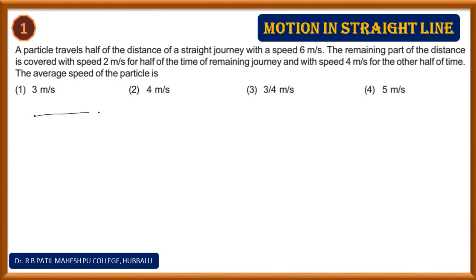Let me mark the total journey as distance x, from initial point A to final point B. First half journey is x/2 and second half is x/2, with midpoint C. The velocity in the first segment is v1 = 6 m/s.